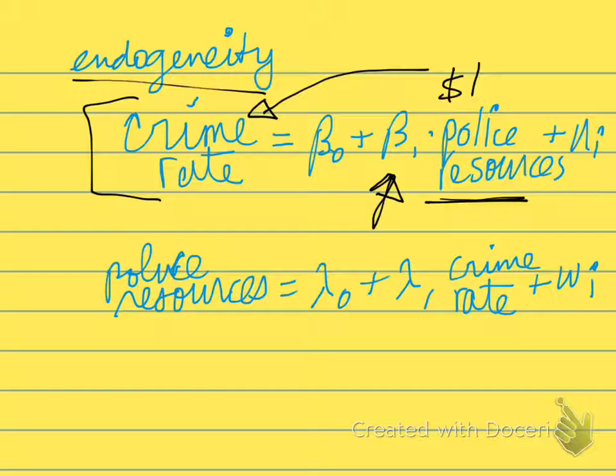So we might normally think more resources for police will reduce the crime rate. So we collect our data and run this regression.